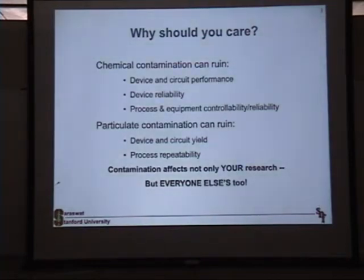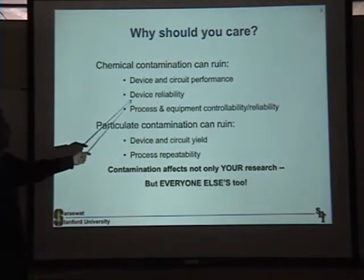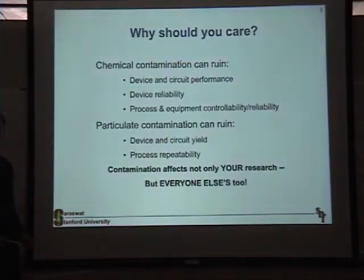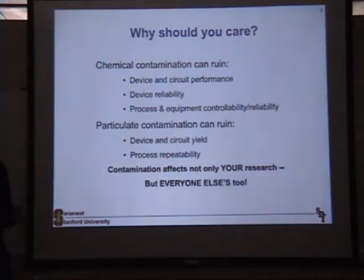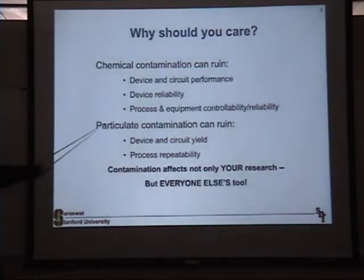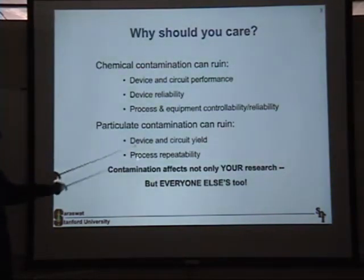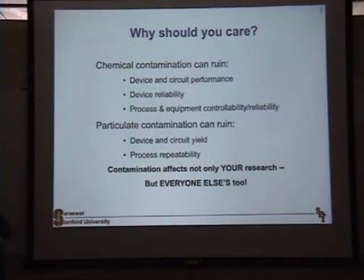Why should we care? Chemical contamination can ruin the device and circuit performance, the reliability of the devices, and most importantly, process and equipment controllability and reliability. In the lab, we have one of a kind of each equipment. And if you are not careful, you screw up the equipment — everybody gets hurt. Particulates, the contamination which may be floating around in the air or generated by the equipment, can impact the device and circuit yield and process repeatability. Contamination affects not only your research, but everybody else's research.